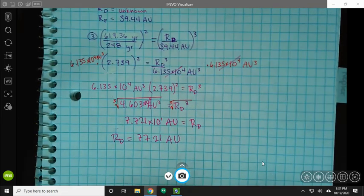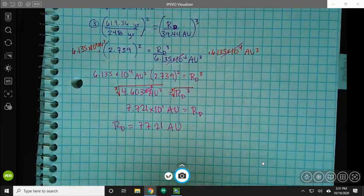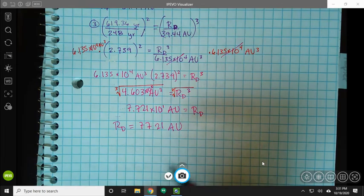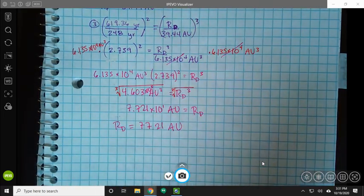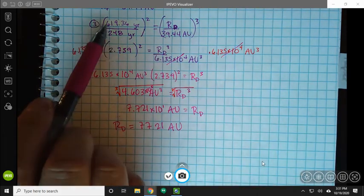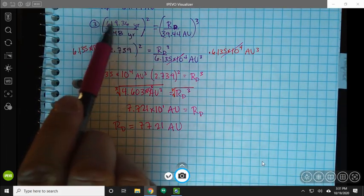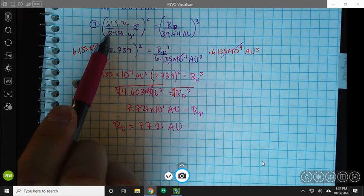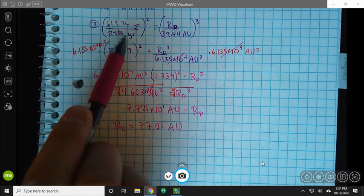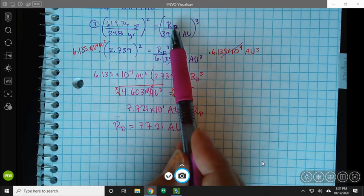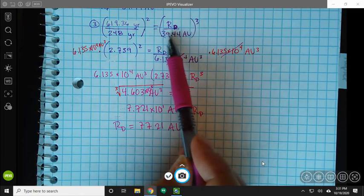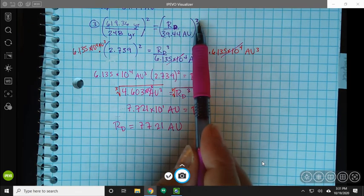So now I'm going to go on down here to step three and solve. And this is the whole thing worked out, worked out much more quickly, with fewer annotations than before. So I've just plugged in my number. So 619.36 years, over 248 years. And that quantity is squared here. I've got RD over 39.44 AU. This whole quantity is cubed.